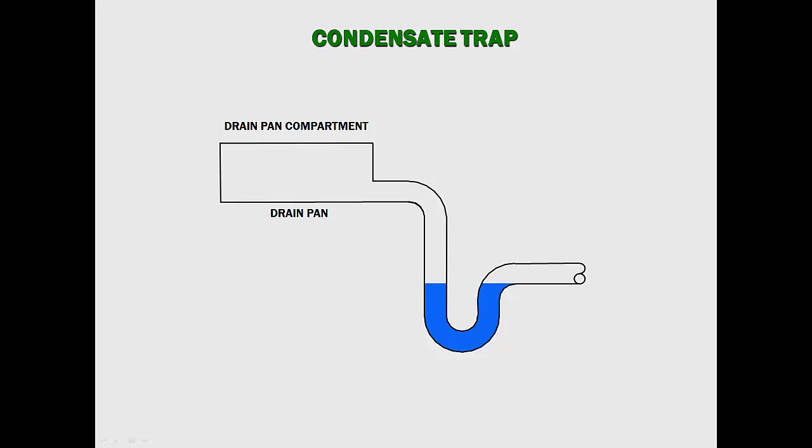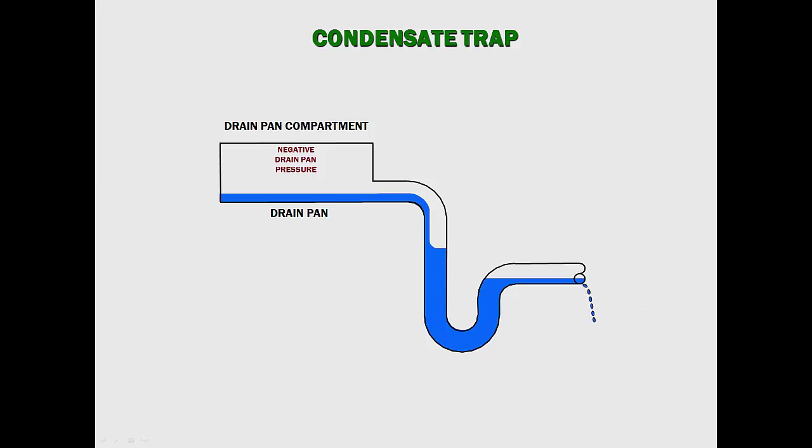When the air conditioning system is not operating, the trap must retain enough water to affect a seal when operation begins. When the air conditioning unit starts, the trap water rises, negates the negative pressure, and prevents airflow into the drain pan. As condensate flows, the trap is filled, and the water column rises to a level necessary for condensate to flow from the trap.